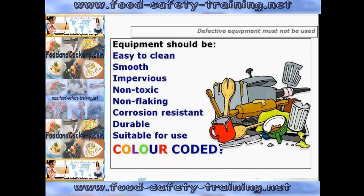Colour coding is a system used in the catering industry as a method of preventing cross contamination. We use a separate colour for a separate process within the kitchen environment. For example, we use a red chopping board or preparation board with a red handle knife for raw food, yellow for cooked food, blue for raw fish, green for salad vegetables and fruit, white for dairy products, cheese, sandwiches, baguettes, etc., and brown for root vegetables.